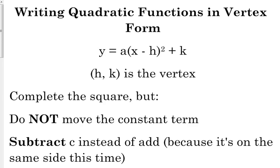But what vertex form tells us is just automatically looking at it, we can tell exactly what the vertex is. It is h, k.